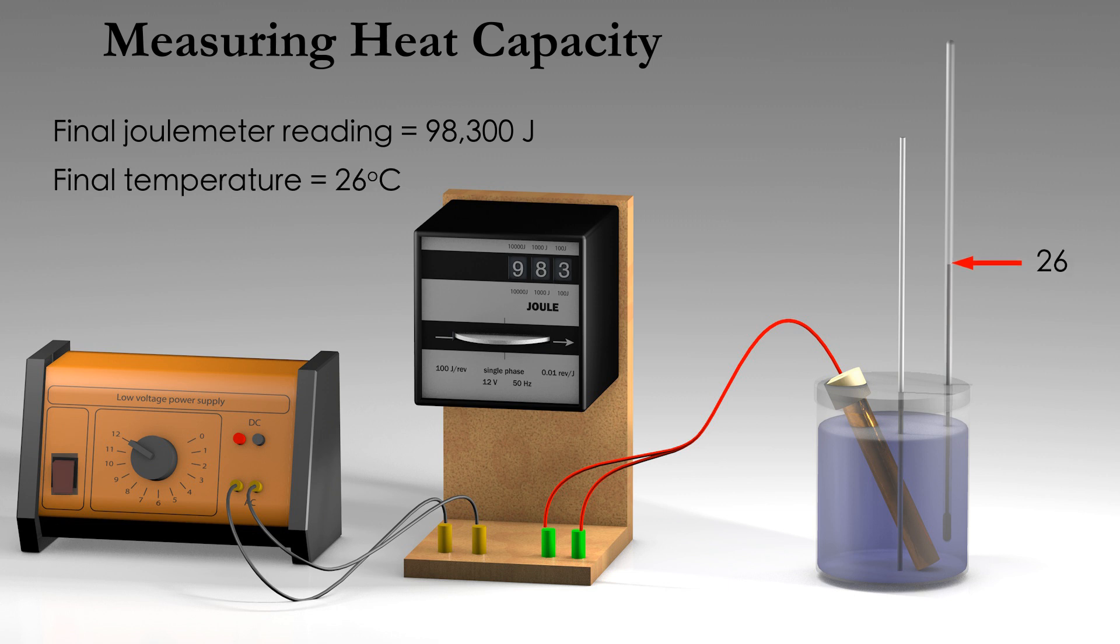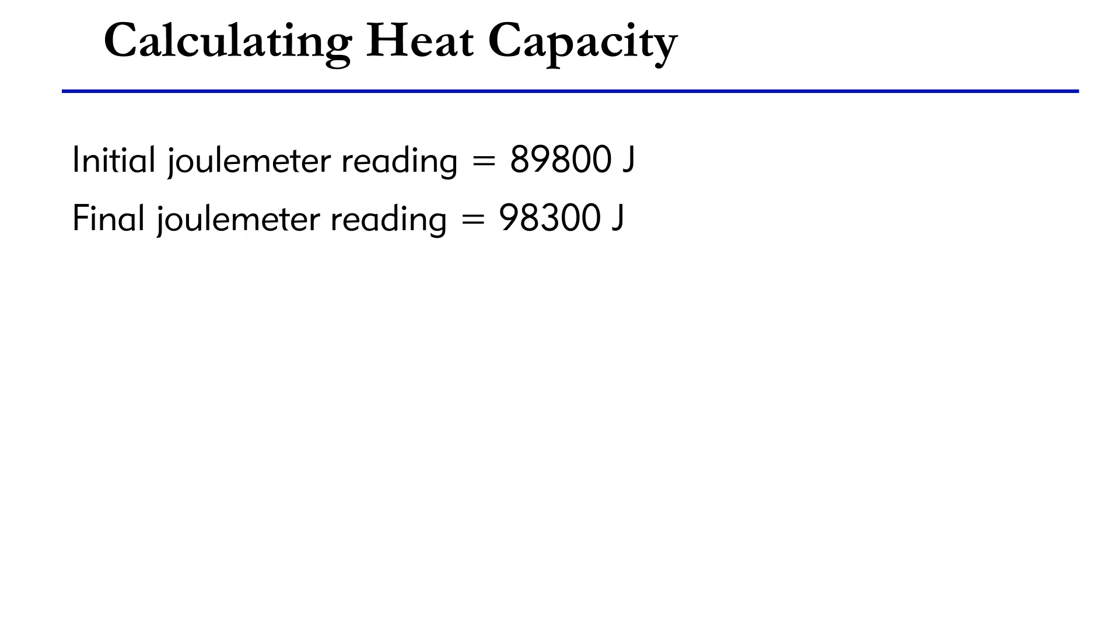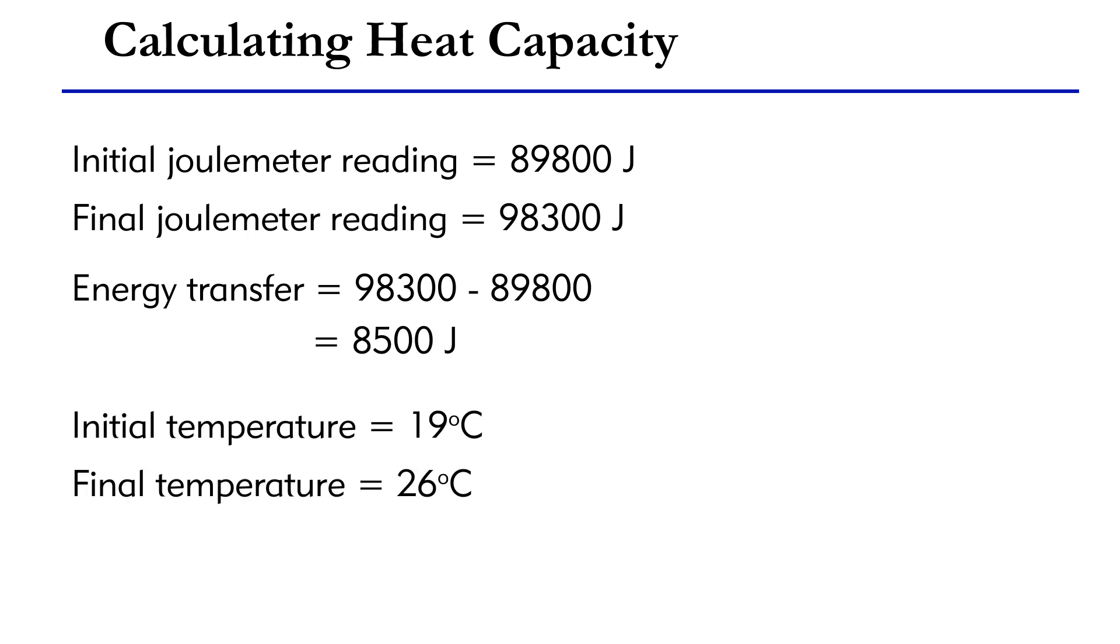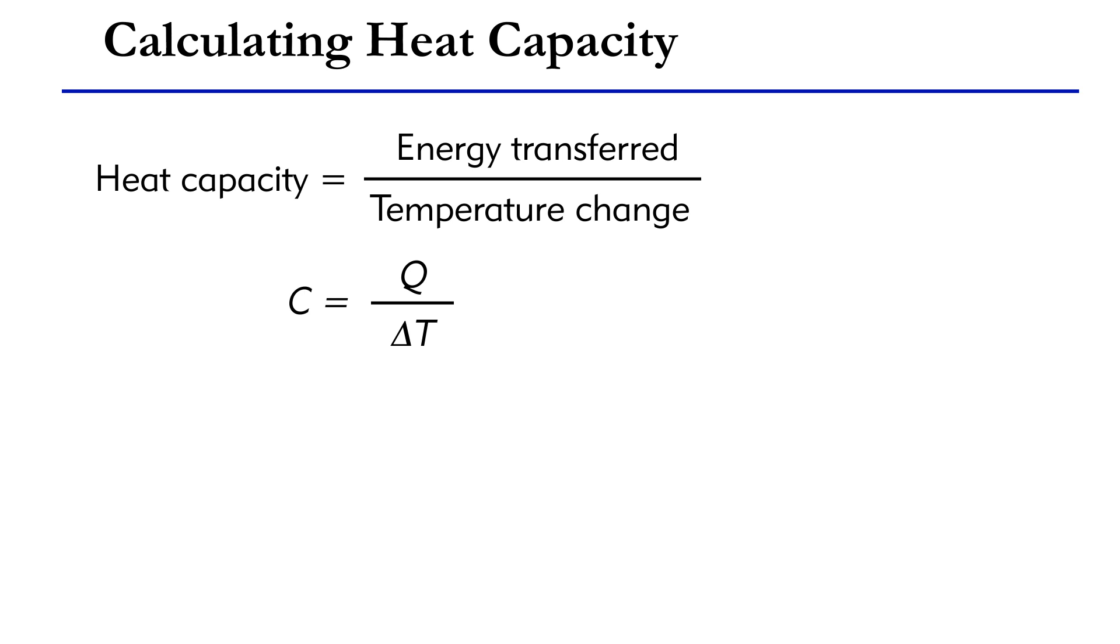The maximum temperature recorded is 26 degrees Celsius. From the data, the energy transmitted is 98,300 minus 89,800, which is 8,500 Joules. The change in temperature is 26 degrees Celsius minus 19 degrees Celsius, which is 7 degrees Celsius.